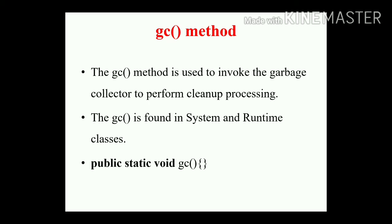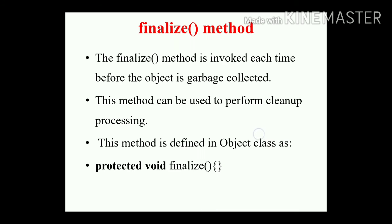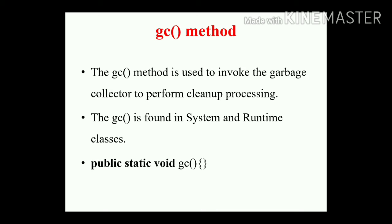The gc() method is used to invoke the garbage collector to perform cleanup processing. It is found in the System and Runtime classes, and it is declared as: public static void gc(). These two methods — finalize() and gc() — are used to perform cleanup processing.